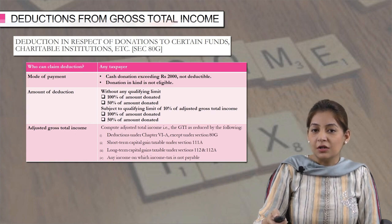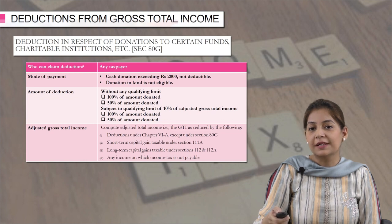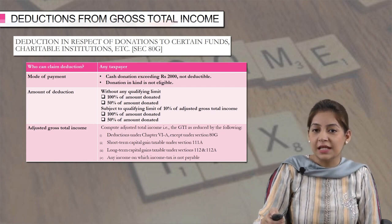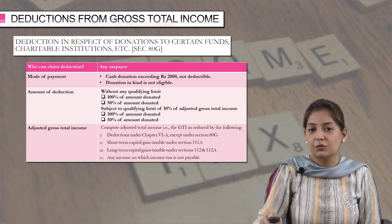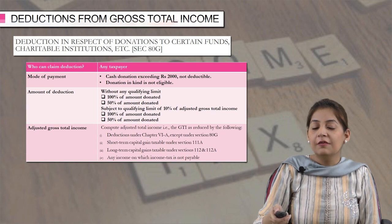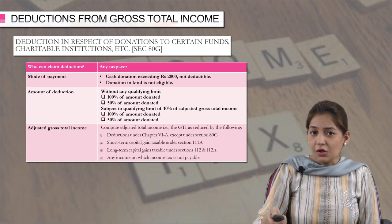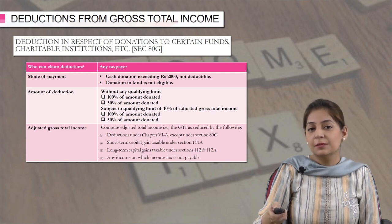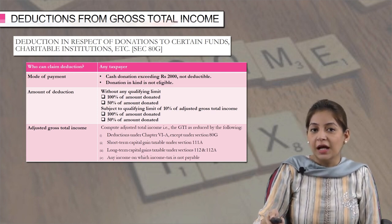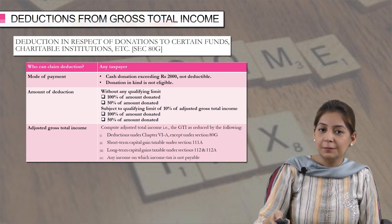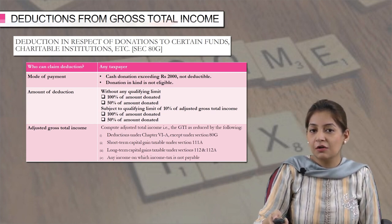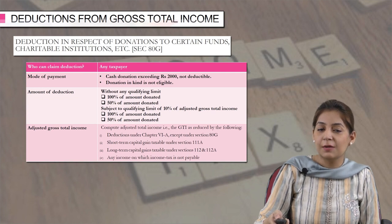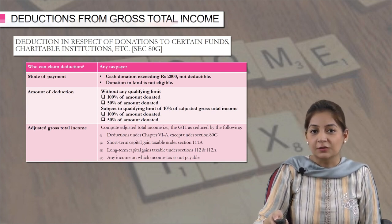For example, if after deducting all these amounts my adjusted gross total income comes out to be rupees 10 lakh, then I calculate 10 percent of this 10 lakh which is rupees 1 lakh. So if my donation falls in the category with this maximum ceiling, the maximum ceiling would be rupees 1 lakh. If it is 100 percent of amount donated, you can claim 1 lakh; if it is 50 percent of amount donated, you can claim rupees 50,000.